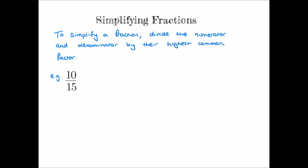If you're making notes, write down: to simplify a fraction, we divide the numerator and denominator by their highest common factor. We'll now simplify ten fifteenths. Both ten and fifteen can be divided by five — that's their highest common factor. Ten divided by five is two, whilst fifteen divided by five is three, and so ten fifteenths simplifies to two thirds.